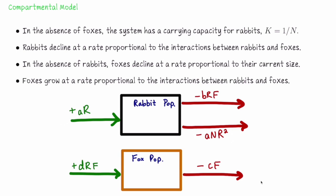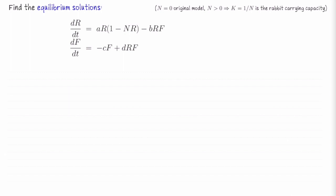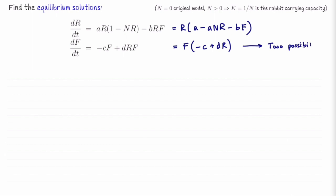Now let's go back to the equations and look for equilibrium solutions. For the right-hand side of the first equation, we'll factor r out front, leaving r times (a minus a·n·r minus bf). For the second equation, we'll factor f out front, leaving f times (negative c plus dr). The second line gives two possibilities: either f equals zero, or r equals c/d. Both could be true simultaneously, so we'll consider that too.